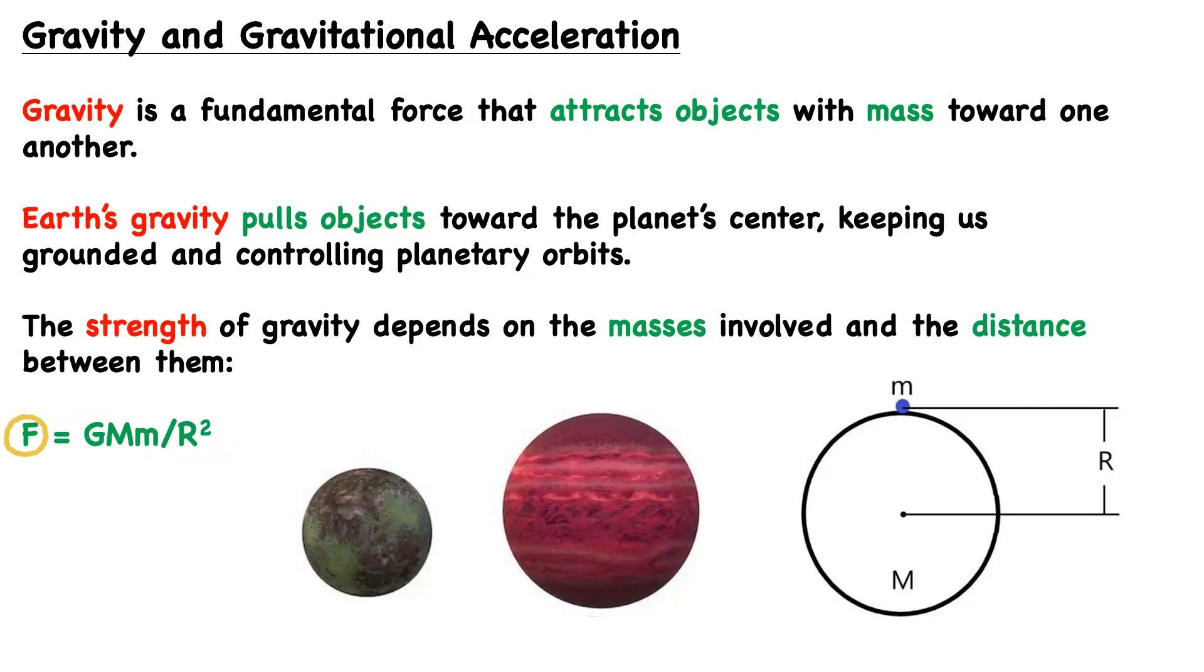Gravitational force is equal to the constant G, the gravitational constant, times the mass of the planetary body, times the mass of the body on the planet's surface, and that is all divided by the square of the radius, the square of the distance between them.